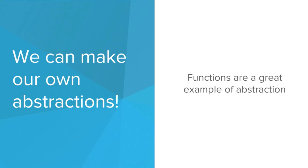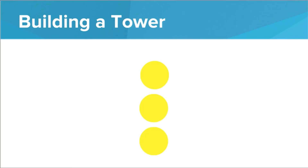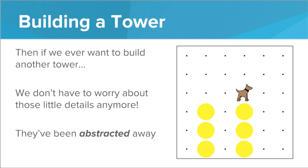So how does this relate to us when we're programming? We can make our own abstractions. Functions are a great example of abstraction. Take building a tower — there's a lot of different ways to build a tower and a lot of nitpicky details involved. We could build the bottom, then the middle, then the top, or middle and bottom then top. Each of these ways involves a lot of moves, turn lefts, turn arounds, and turn rights. Wouldn't it be nice if we could just type build tower and Karel knew exactly what to do? We can write that function, and then we abstract away those picky details. We have this high level building block of build tower and we don't have to worry about what's going on under the hood.